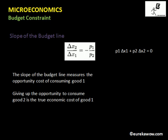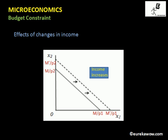Now we will look at shifts in the budget line, starting with the effects of changes in income. Given p1·x1 + p2·x2 = m, if the income of the individual increases, the consumer will be able to buy more of both goods (assuming they are normal goods). The budget line shifts outwards in parallel. The horizontal intercept increases from m/p1 to m'/p1, and the vertical intercept increases from m/p2 to m'/p2, since m' > m.